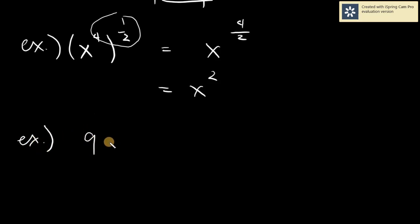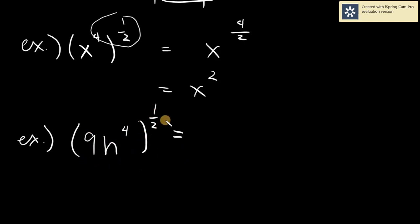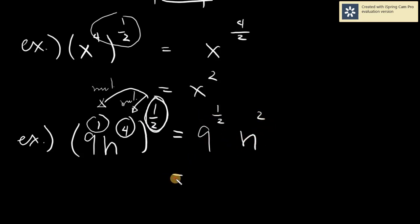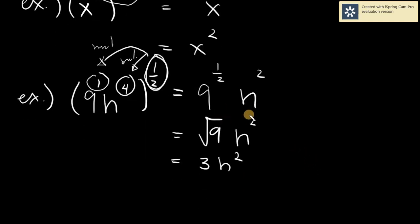Now combining numbers and letters: 9n raised to four, all raised to one half. Using the power of a product rule, we distribute the exponent to both the number and the variable. One half times the exponent of nine (which is one) gives nine raised to one half. One half times the exponent of n (which is four) gives n raised to two. Nine raised to one half equals the square root of nine, which is three. So our final answer is 3n squared.